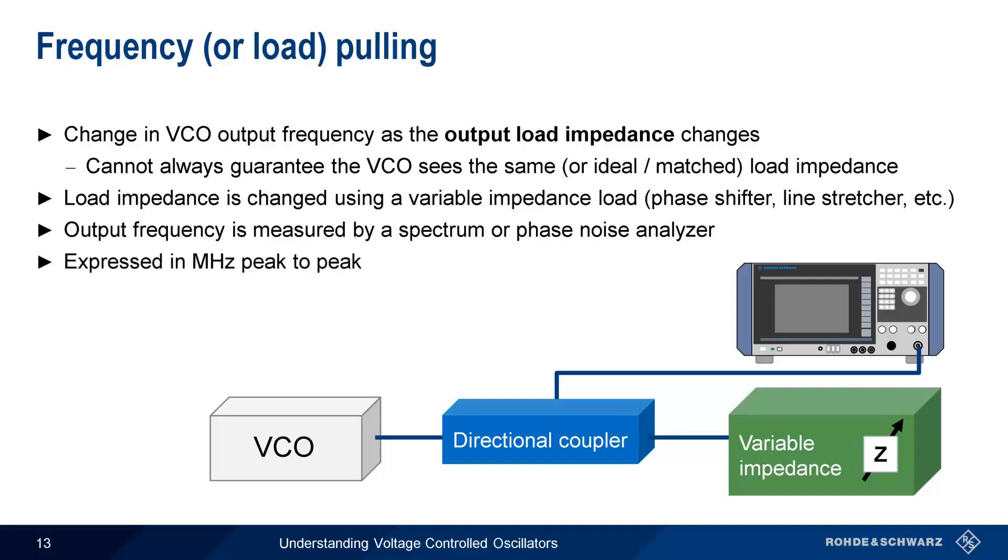A spectrum or phase noise analyzer is then used to measure output frequency at different load impedances. Frequency pulling is expressed in MHz, peak to peak, and shows the maximum deviation from the nominal output frequency. Since this change is a function of the output impedance, it's necessary to specify the range of impedances, or VSWR values, over which pulling was measured.